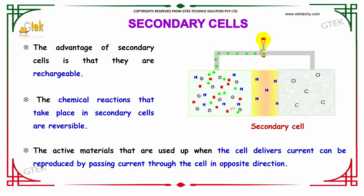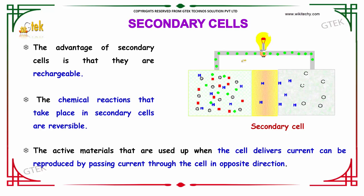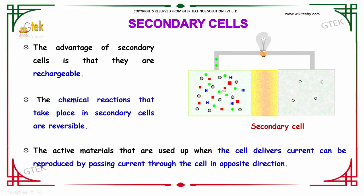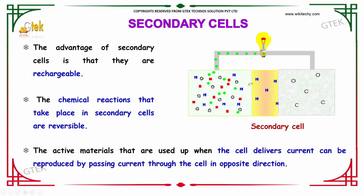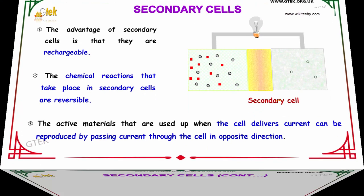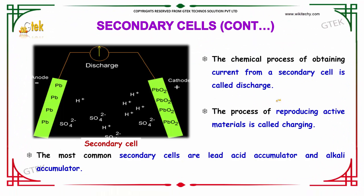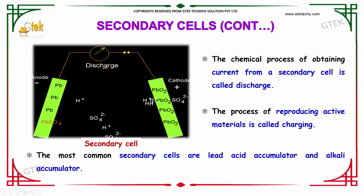The chemical reactions that take place in the secondary cell are reversible. The active materials that are used when the cell delivers current can be reproduced by passing current to the cell in the opposite direction. The chemical process of obtaining current from a secondary cell is called discharge, and the process of reproducing the active materials is called charging.